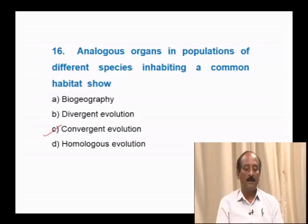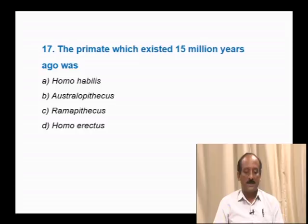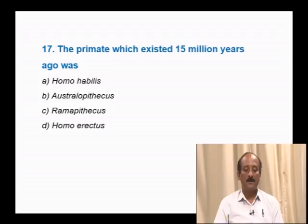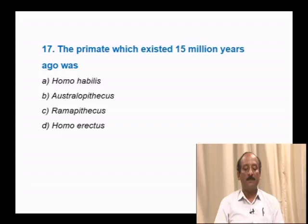Question number 17: The primate which existed 15 million years ago was — Homo habilis, Australopithecus, Ramapithecus, Homo habilis. Till 15 million years ago, the first primates were Ramapithecus and Dryopithecus. In the given options, only Ramapithecus is present. The correct answer is Ramapithecus.